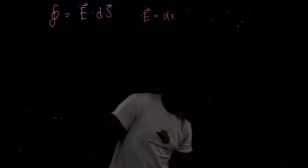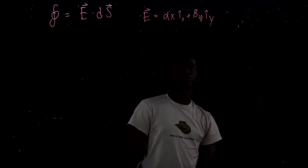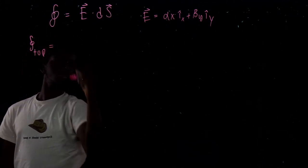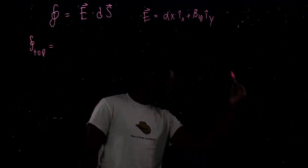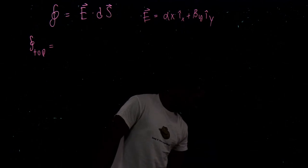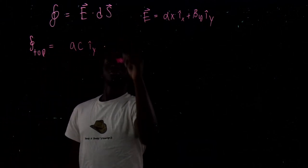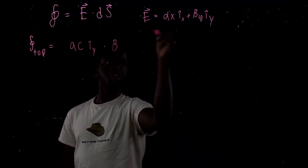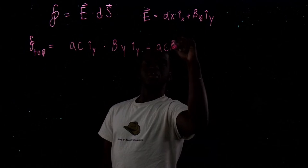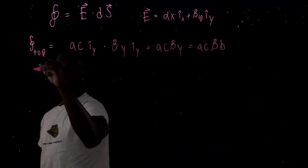The flux formula is Φ = E · dA. The electric field is E = alpha x i-hat x + beta y i-hat y. For the top face: the outward normal is i-hat y and the area is ac. Dotting gives Φ_top = ac × beta y = ac × beta × b, since y = b at the top.